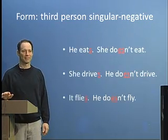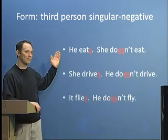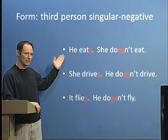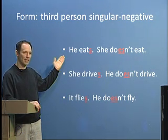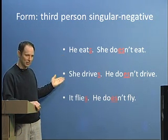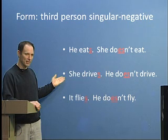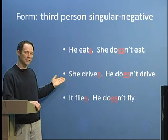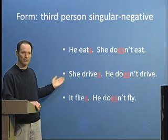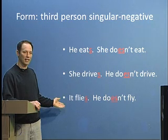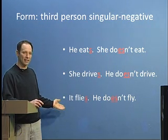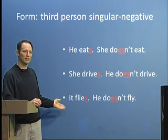Let's look at some examples. 'He eats' — the negative becomes 'she doesn't eat.' 'She drives' — the negative becomes 'he doesn't drive.' And 'it flies' — the negative becomes 'he doesn't fly.'